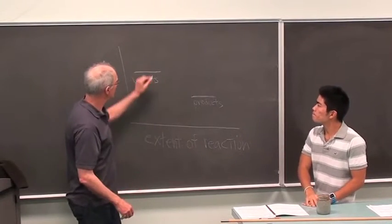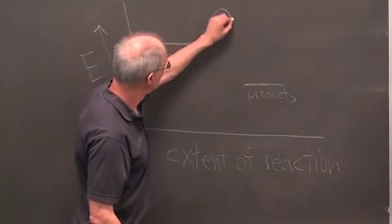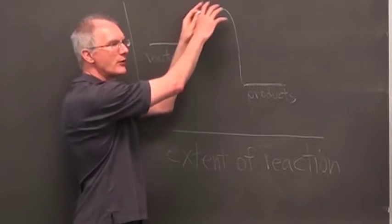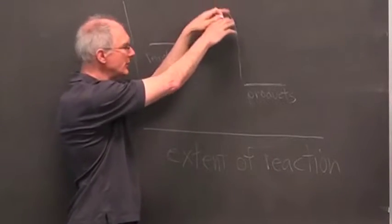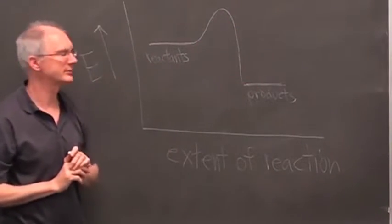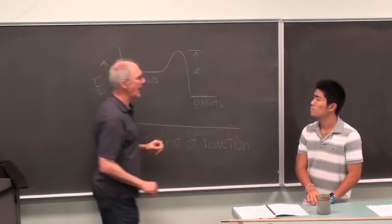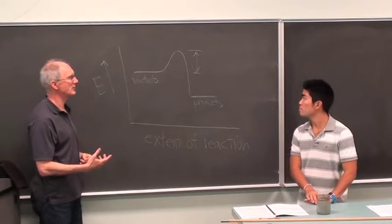I can represent this on the diagram by drawing a hump. The molecules are reacting—they have to follow this path, they have to go to higher energy before they can go to the products. This is how much you have to pay for the reaction to actually start.